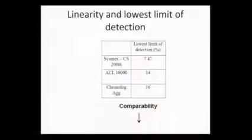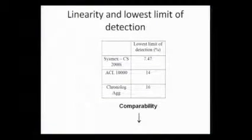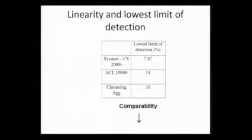The advantage of the CISMS CS2000 is that the lowest limit of detection is 7.47, compared to ACL 10,000 which is 14, and Chronolog which is 16.